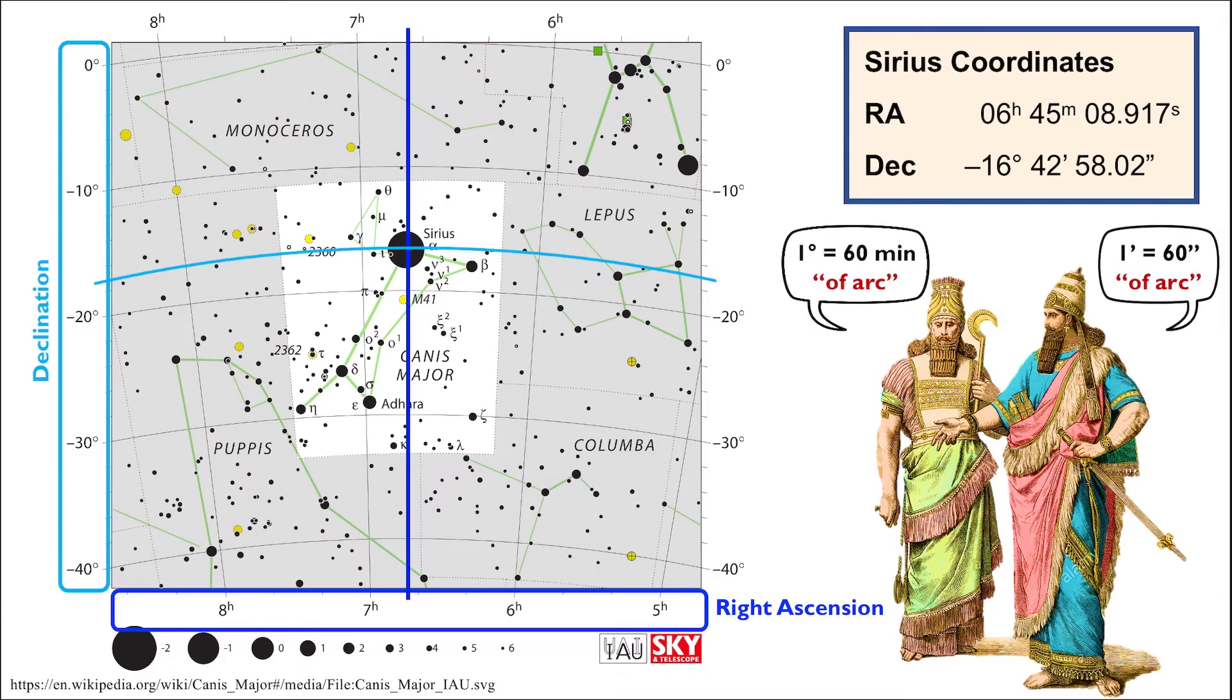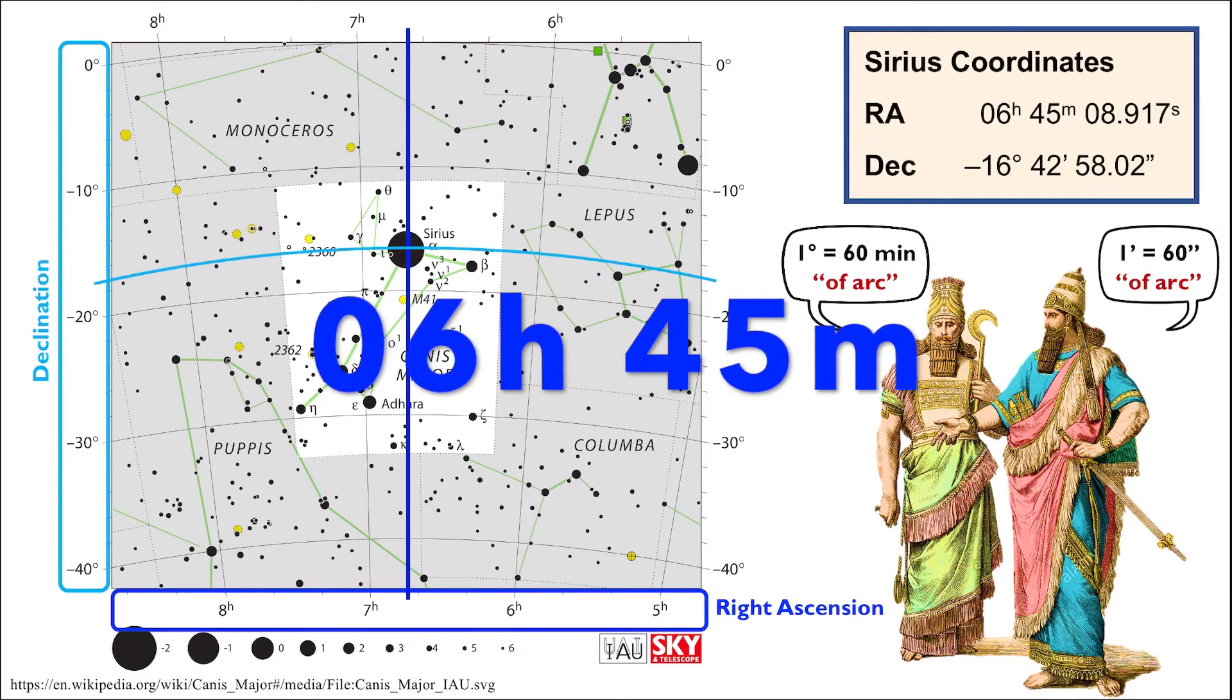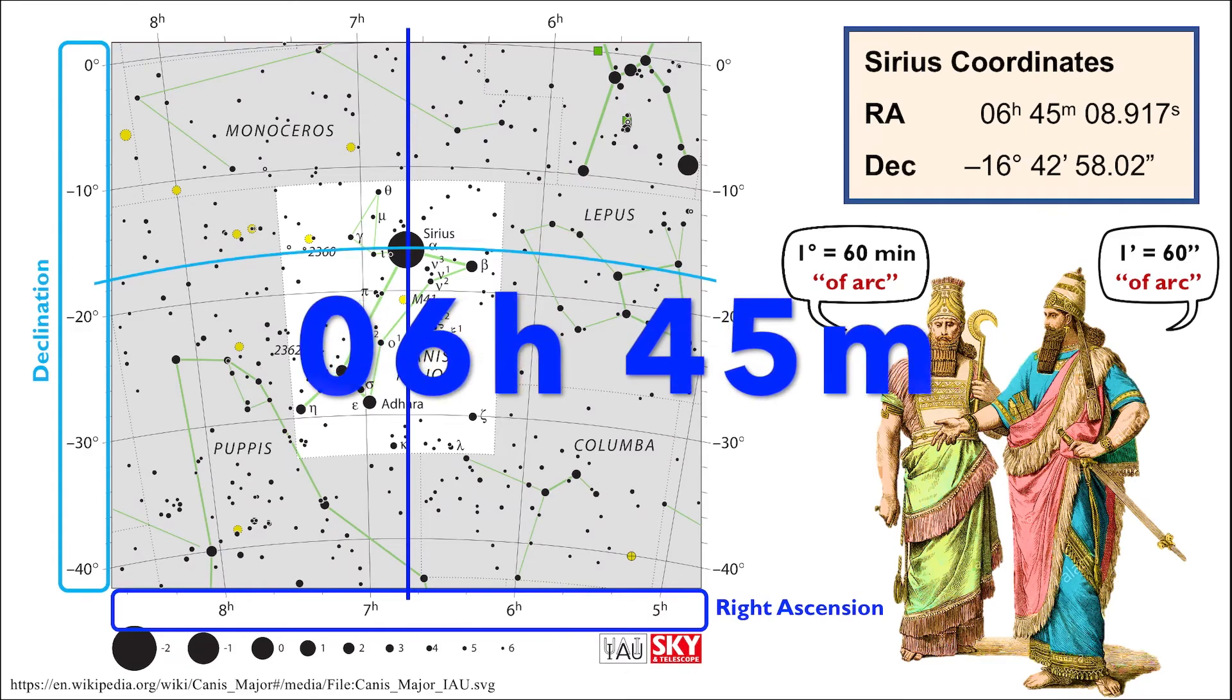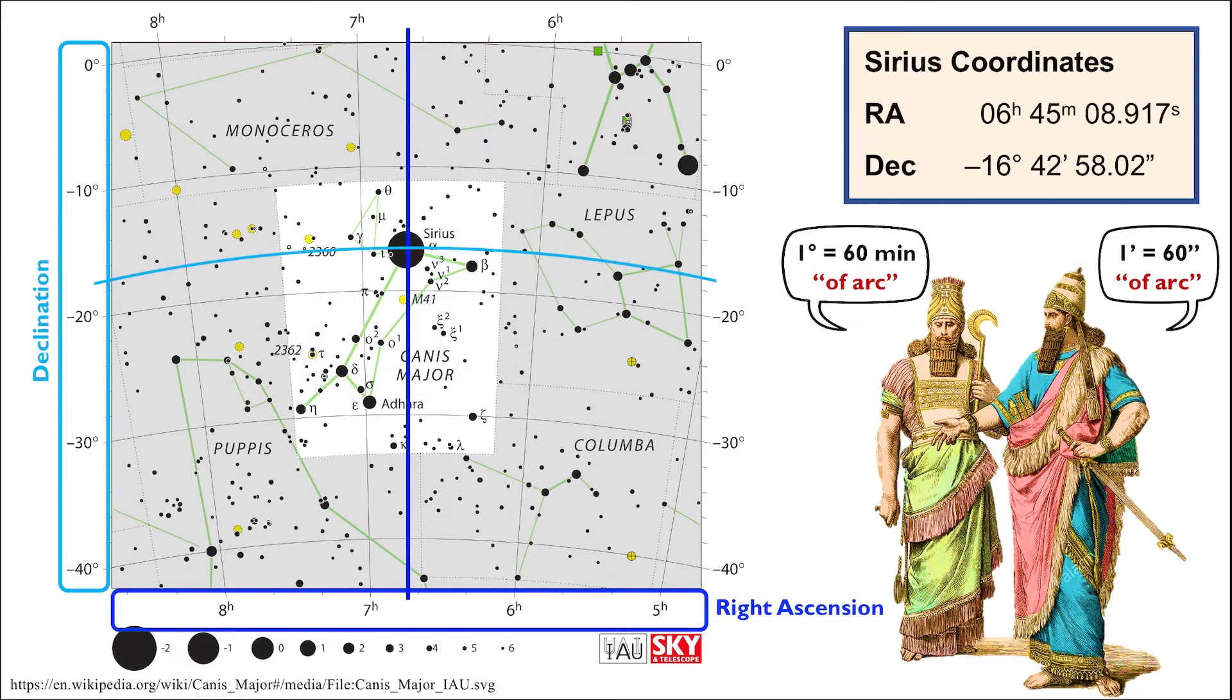We can see that it has an RA value of six hours and 45 minutes, having gone nearly three quarters of the way between the sixth and seventh hour circles.